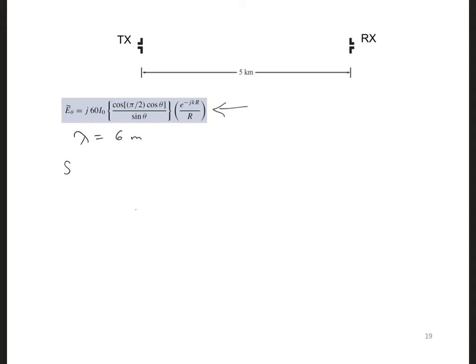That is, we need to find S intercepted, and we can take that at the receiving antenna, and we need to take that and multiply it times the effective area of the receiving antenna.